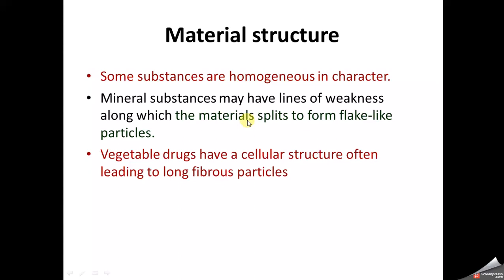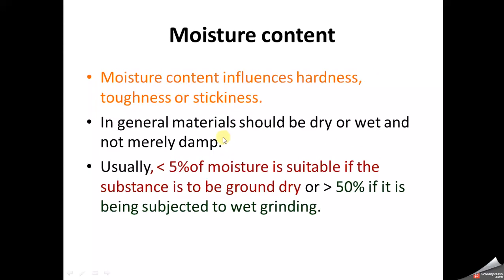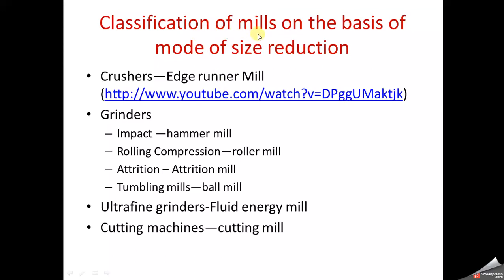Material structure must also be considered. Some substances are homogeneous; mineral substances may have lines of weakness along which they split to form flake-like particles, while vegetable drugs have a cellular structure often leading to long fibrous particles. A very important factor is moisture content, as it ultimately affects hardness, toughness, and stickiness — all of which together determine the mechanism, machinery, and technique to be used. If moisture content is less than 5%, dry grinding is used; if more than 50%, wet grinding is applied.